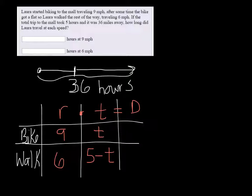So the distance would be nine times t for the bike and then for the walk the distance would be six times five minus t.